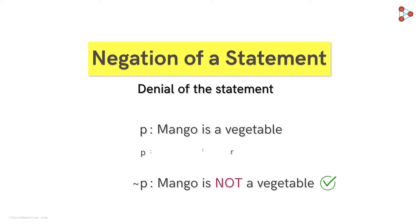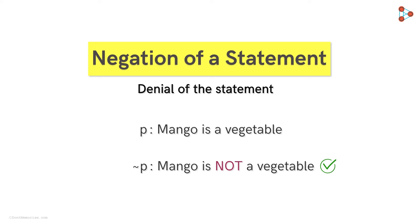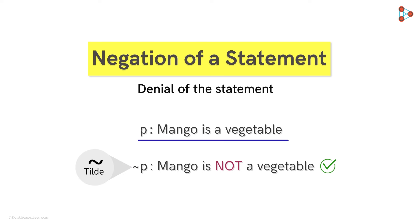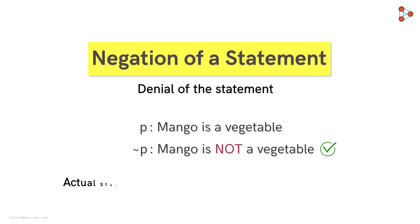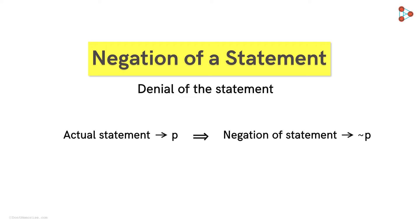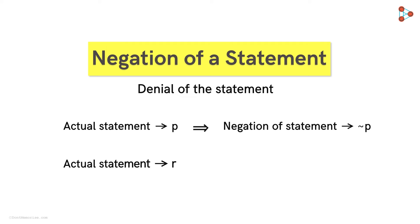Now if you have been attentive, I am sure you must have noticed this in the negation statement. The negation of a statement is denoted by adding a tilde (~) to the letter with which the actual statement is denoted. If the actual statement is denoted with P, the negation would be denoted by ~P. And similarly, if the actual statement is denoted by R, the negation would be ~R, and so on.